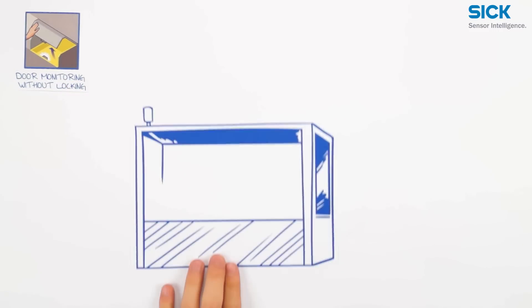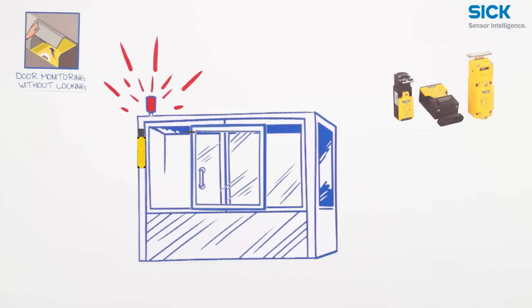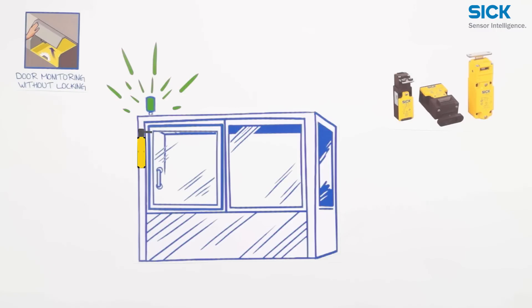To monitor protective doors, you can use electromechanical safety switches with a separate actuator. They switch the machine off if the door is opened, but also provide the retaining force that keeps the door closed in case of light vibrations.